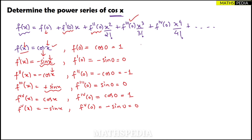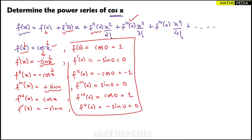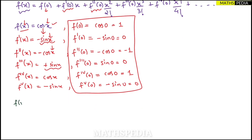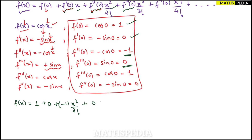Now we substitute all the values into the Maclaurin series formula. f(0) = 1, f'(0) = 0 so that term vanishes, f''(0) = -1 giving -x²/2!, f'''(0) = 0 so that term vanishes, and f''''(0) = 1 giving +x⁴/4!, and so on.